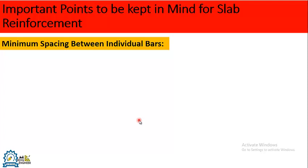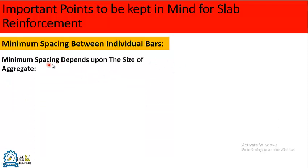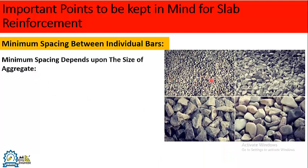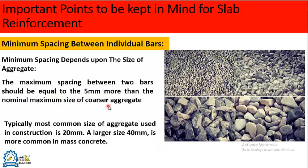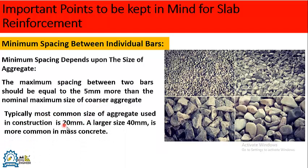The next point is minimum spacing between individual bars. The minimum spacing depends upon the size of the aggregate. There are different sizes of aggregates used in concrete. The minimum spacing between two bars should be equal to 5 mm more than the nominal maximum size of the coarse aggregate. Typically, 20 mm aggregate is used in construction, so the minimum spacing should be 20 + 5 = 25 mm. For 40 mm aggregate, which is more common in mass concrete, the minimum spacing would be 45 mm.